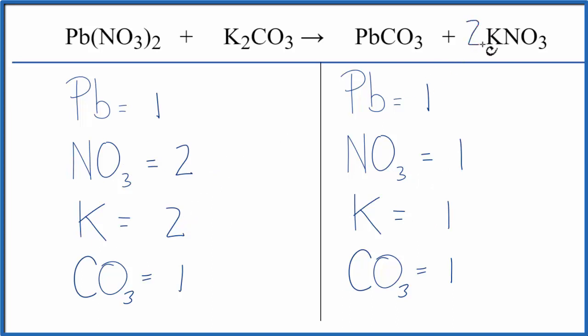Coefficient of 2 in front of the KNO3. It applies to everything. So 1 times 2 for the potassium, that'll give us 2 of those. Those are balanced. And the nitrate, 1 times 2, 2 nitrates. Those are balanced, and we're done.